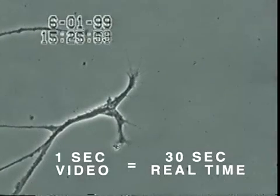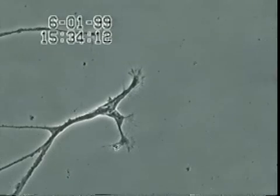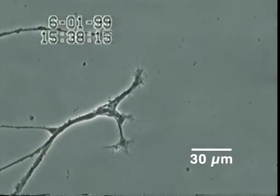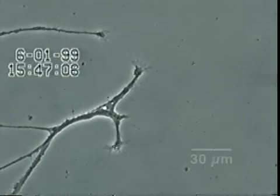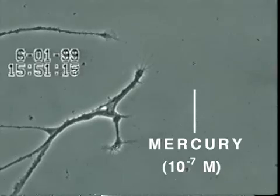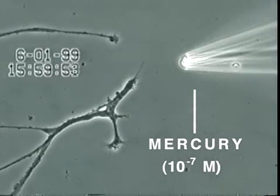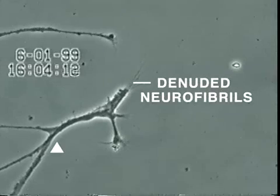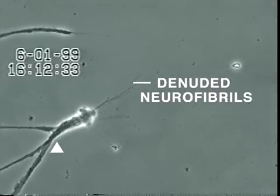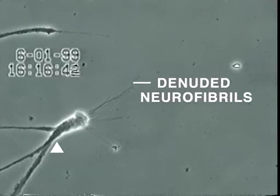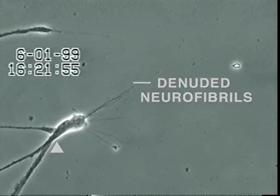In this experiment, neurons also isolated from snail brain tissue were grown in culture for several days, after which very low concentrations of mercury were added to the culture medium for 20 minutes. Over the next 30 minutes, the neurite membrane underwent rapid degeneration, leaving behind the denuded neurofibrils seen here. In contrast, other heavy metals added at this same concentration, such as aluminum, lead, cadmium and manganese, did not produce this effect.